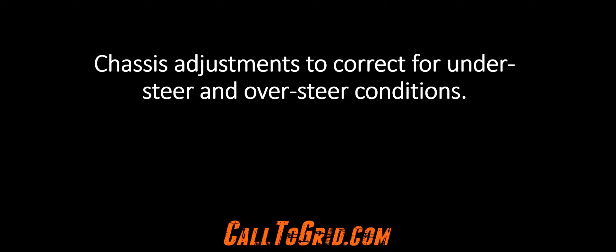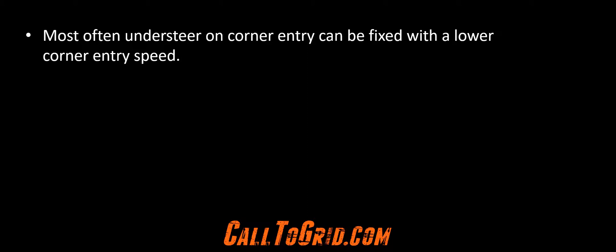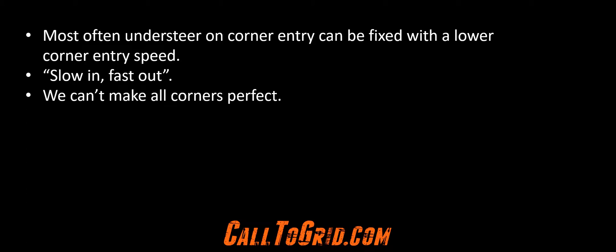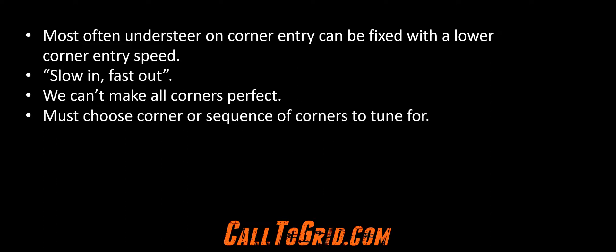In this video, we will address directions for each adjustment to correct for an understeer condition or oversteer condition. This must be said right off the start: seven to eight times out of ten, an understeer condition on corner entry can be fixed by adjusting the driver — entering the corner at a lower rate of speed. Slow in, fast out is the adage. With all these adjustments we will discuss, we may help one corner and make another corner worse. There is no free lunch, as Carol Smith has said. You must decide which corner or sequence of corners is most important and tune the car for those corners.